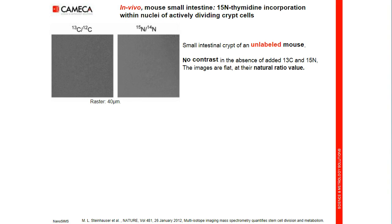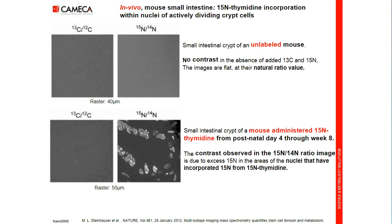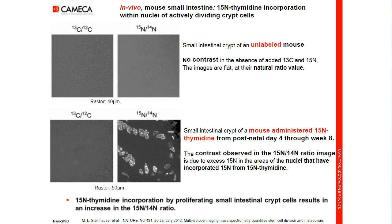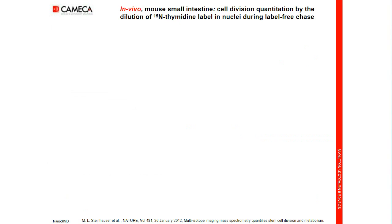In the second step, on a mouse administered nitrogen-15 thymidine from post-natal day four through eight weeks, we see no contrast on the carbon image as expected, but a clear contrast in the nitrogen image in the area of nuclei that have incorporated nitrogen-15 during their division from nitrogen-15 thymidine. So, nitrogen-15 thymidine incorporation by proliferating small intestinal crypt cells results in a measurable increase in the nitrogen-15 over nitrogen-14 ratio.